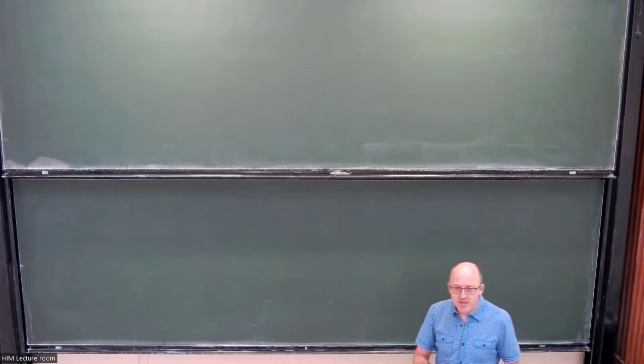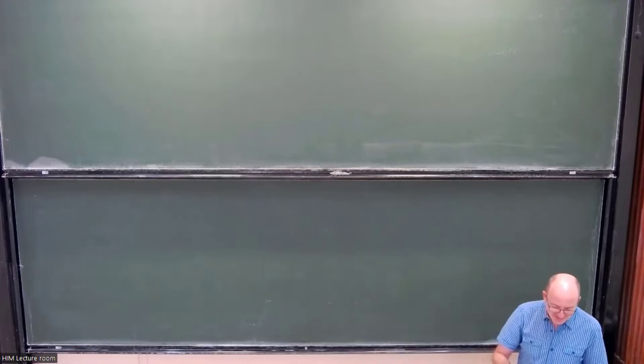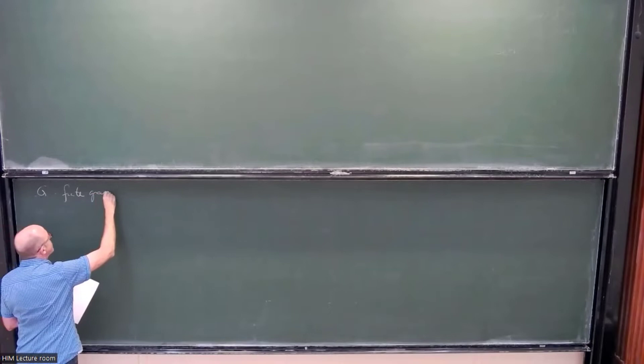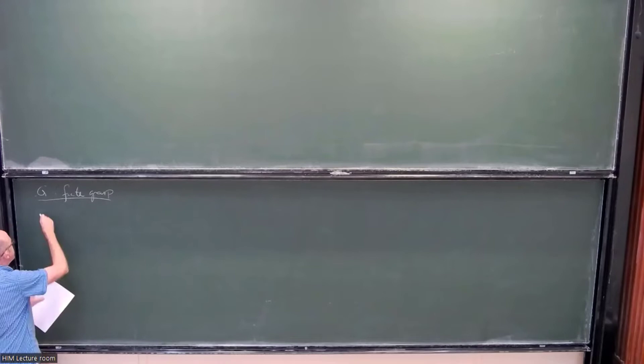Thanks for coming back. I want to start with a brief recap of what I explained last time. I'm going to skip over the motivation, since the fact that you're back proves it was motivating. I'll briefly go into the definition of an orthogonal G-spectrum. Throughout this talk, G is a finite group, though I may sometimes make comments about compact groups. We define what the orthogonal G-spectrum is.